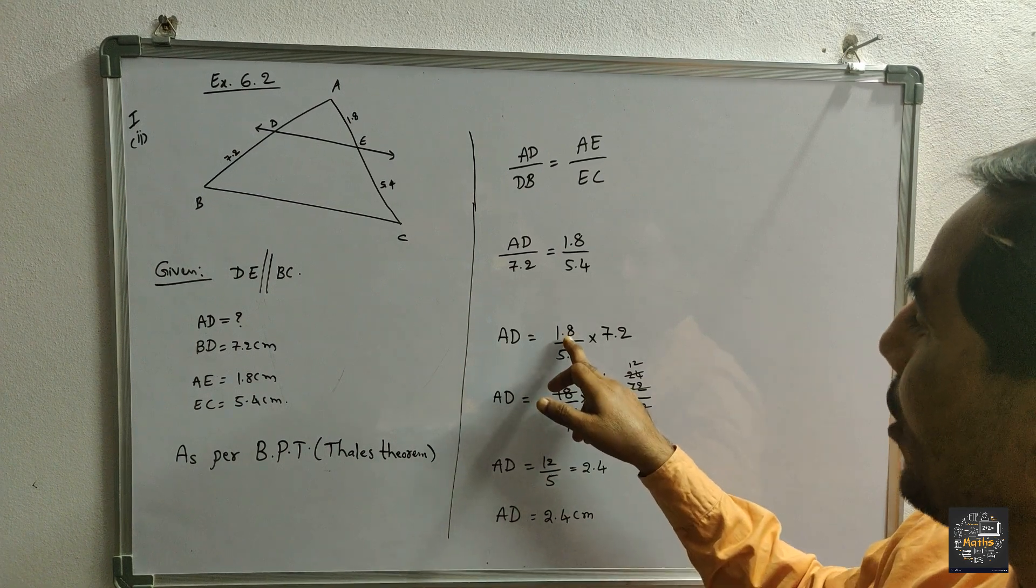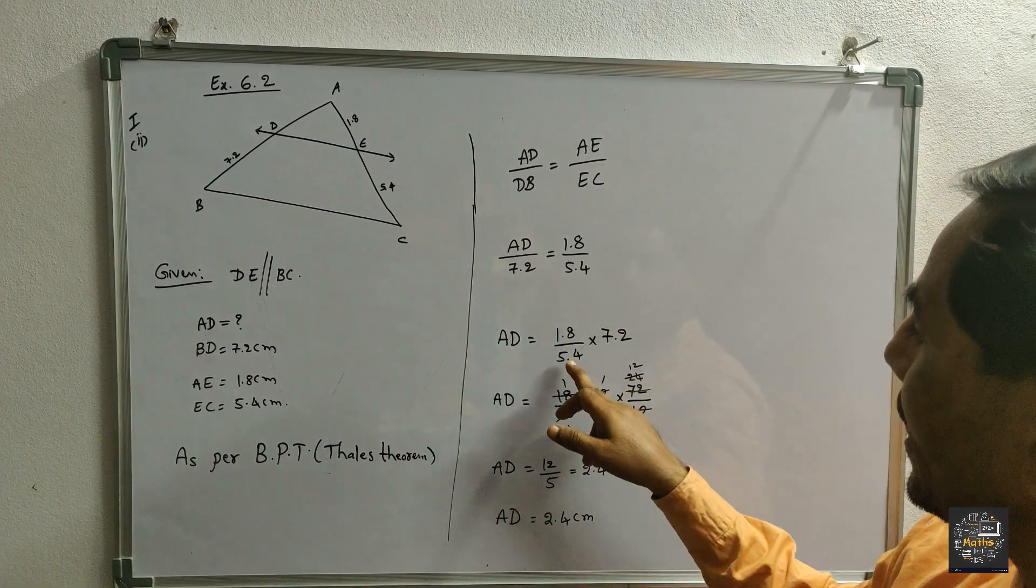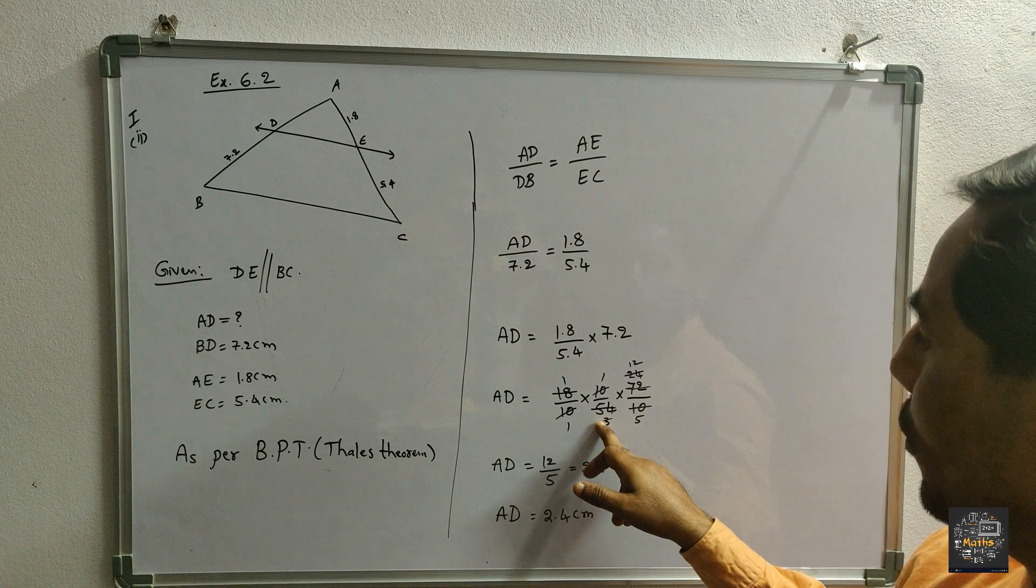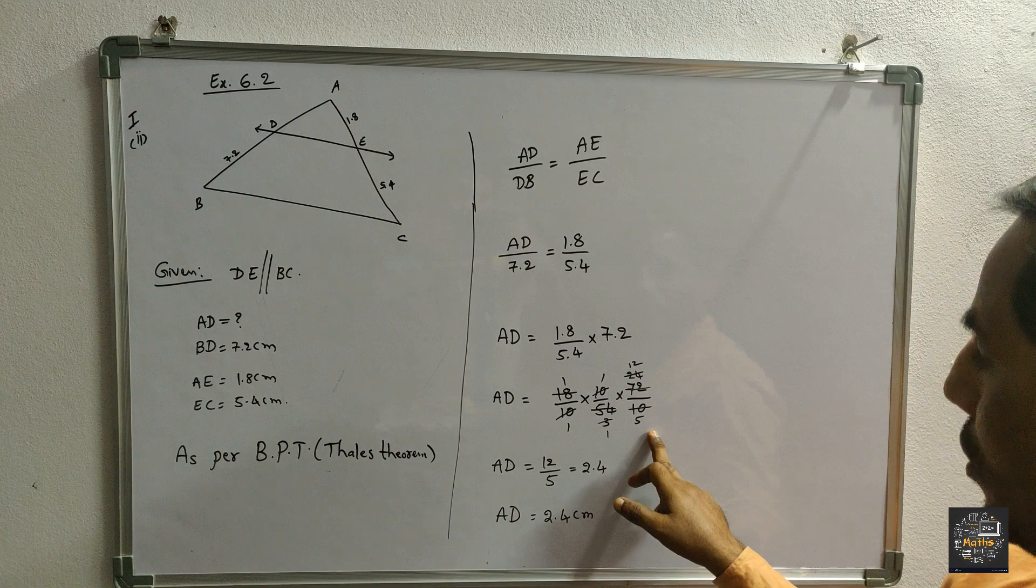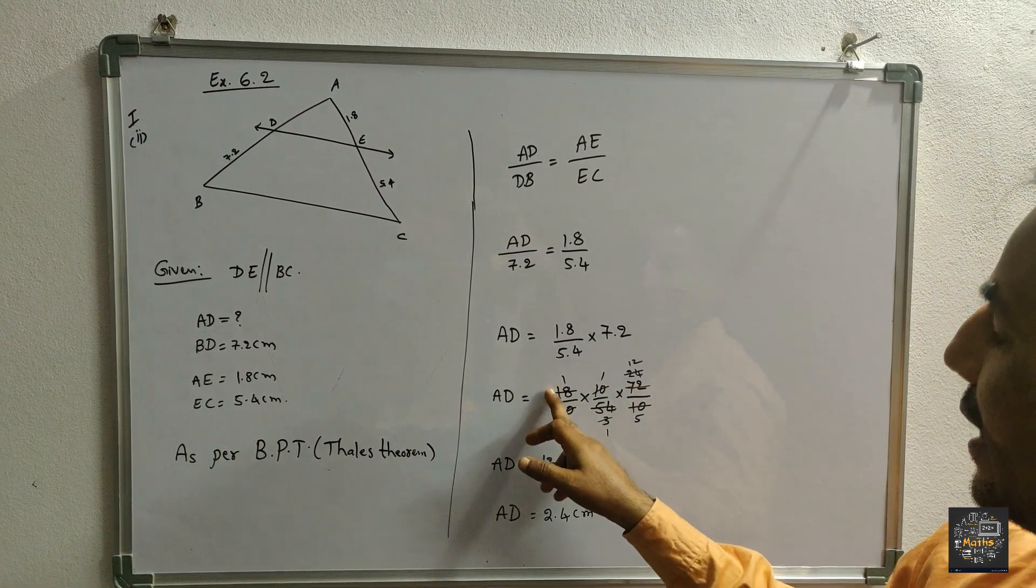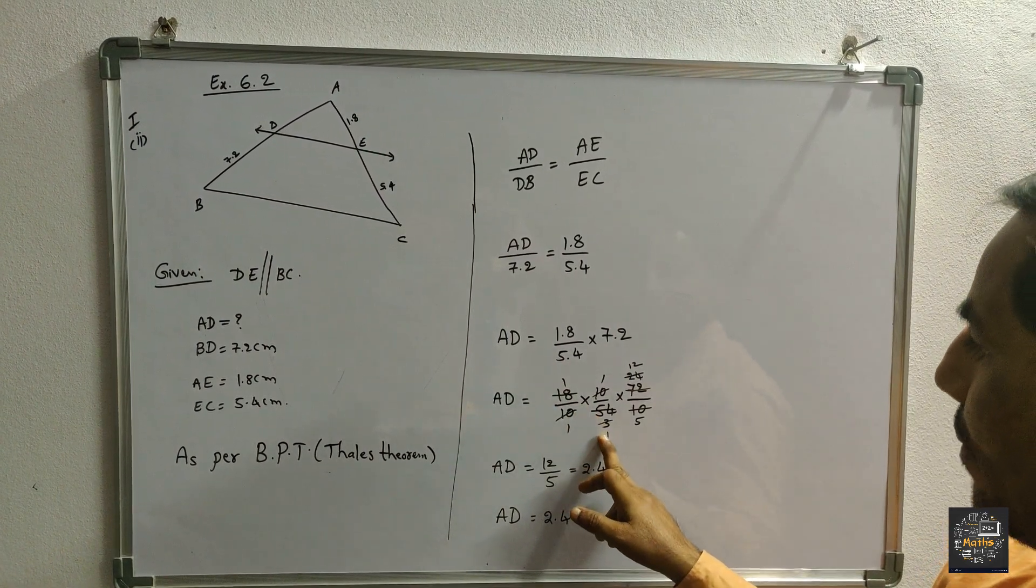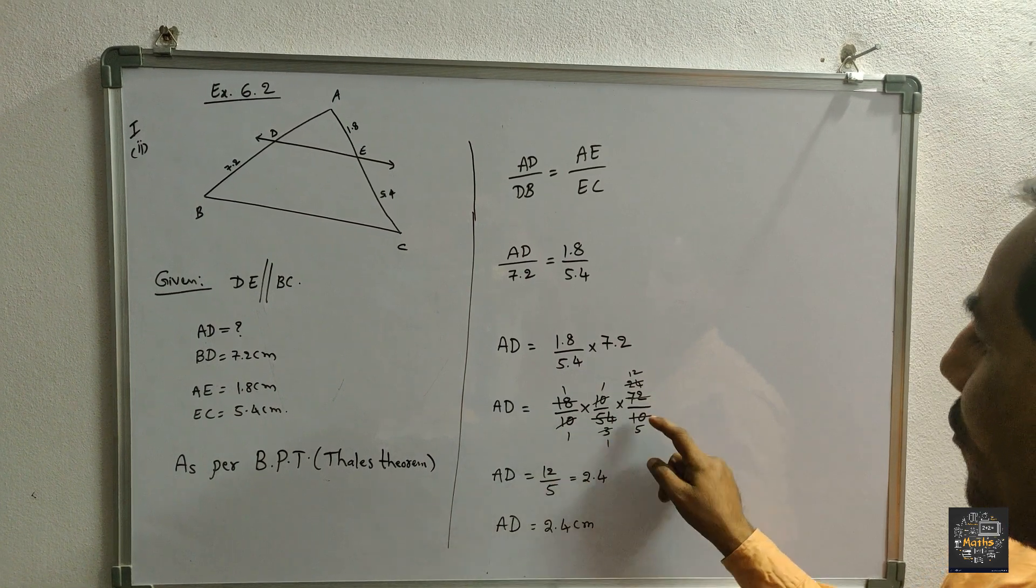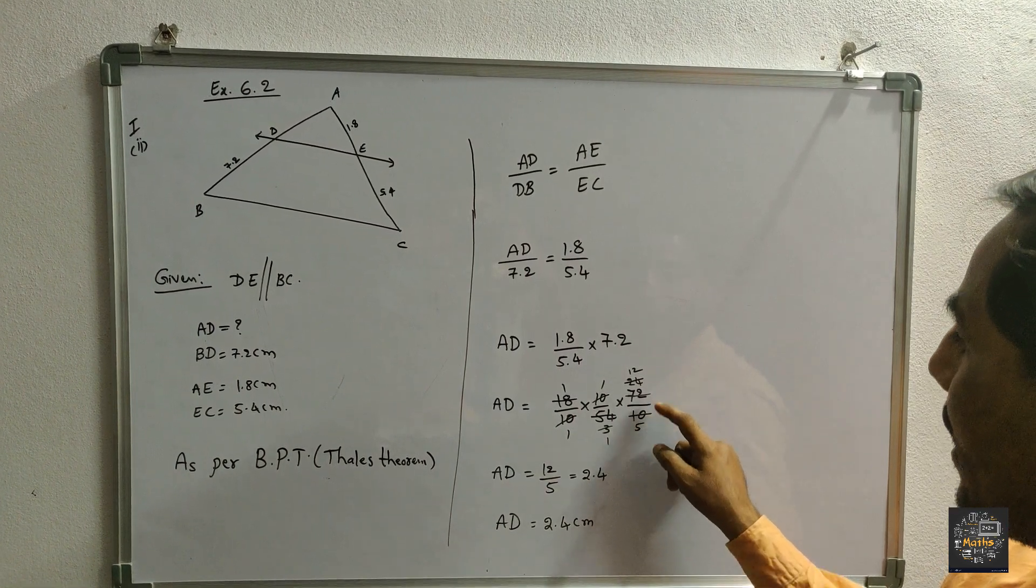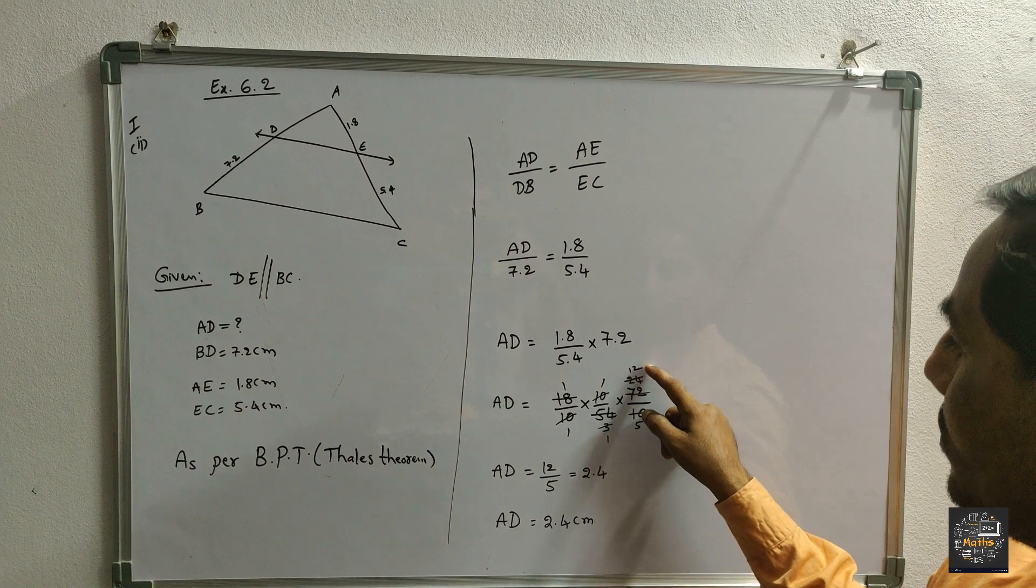AD is equal to 18 by 10, removing the point here, 18 by 10 and 10 by 54, removing the point, into 72 by 10. First of all cancellation: 18 into 3, 10 into 1, 10 into 1. Next, 3 into 1, 2 into 5, 2 into 12.